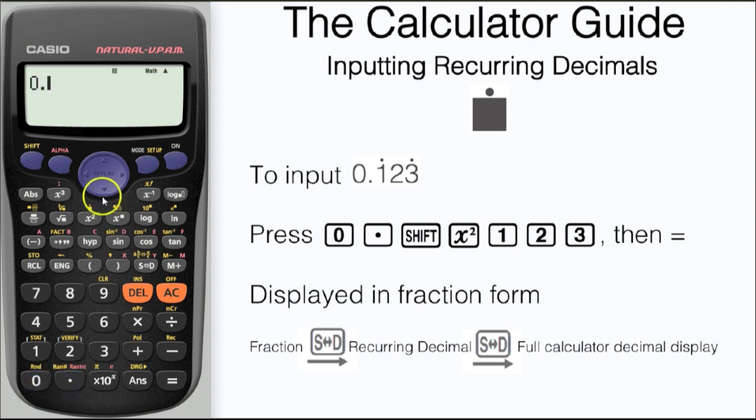Lastly, we'll try a three-figure recurrence, 0.123 recurring. The calculator will automatically add the recurrence as you add the figures. So once you press the function, input 123, and there we have our recurrence.